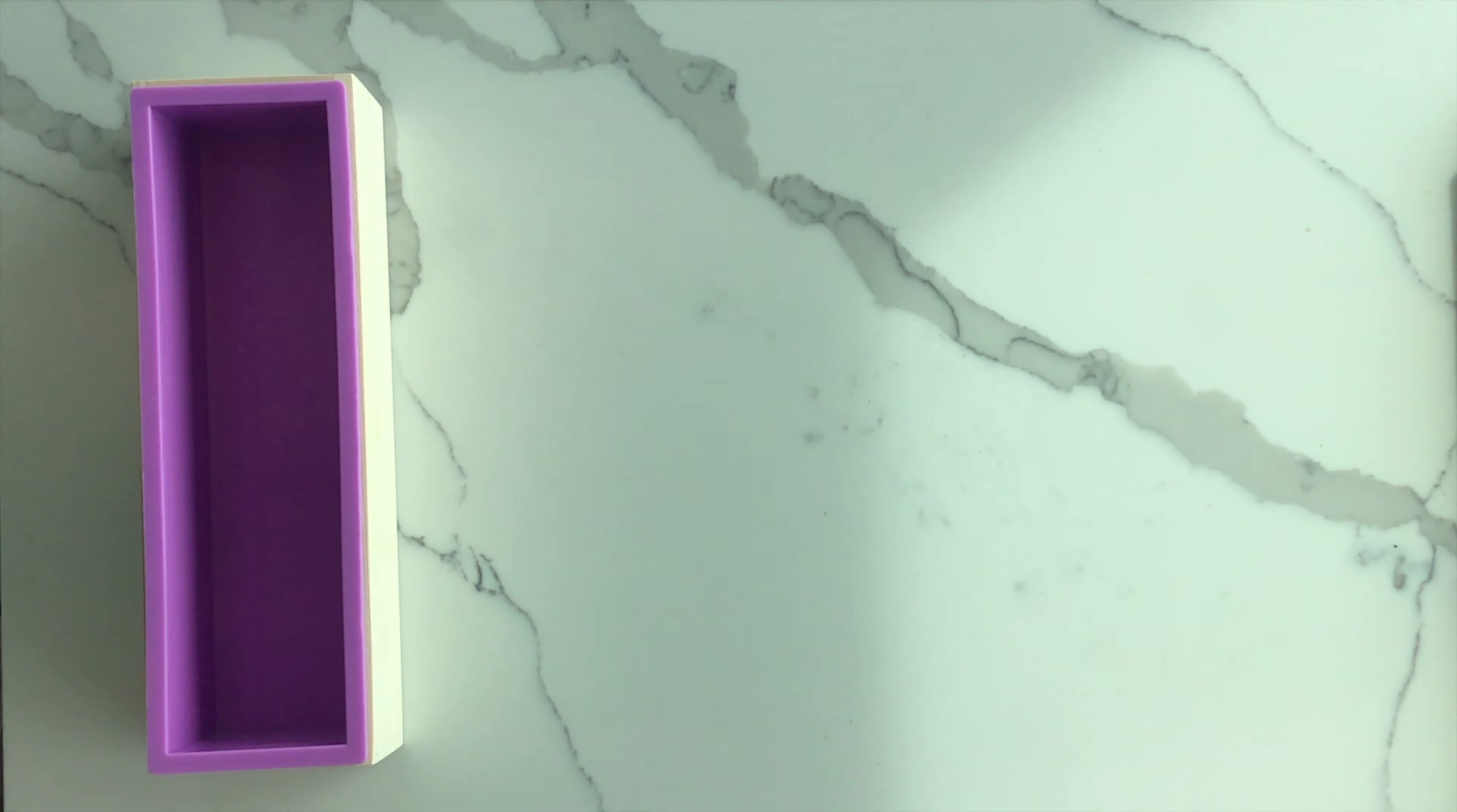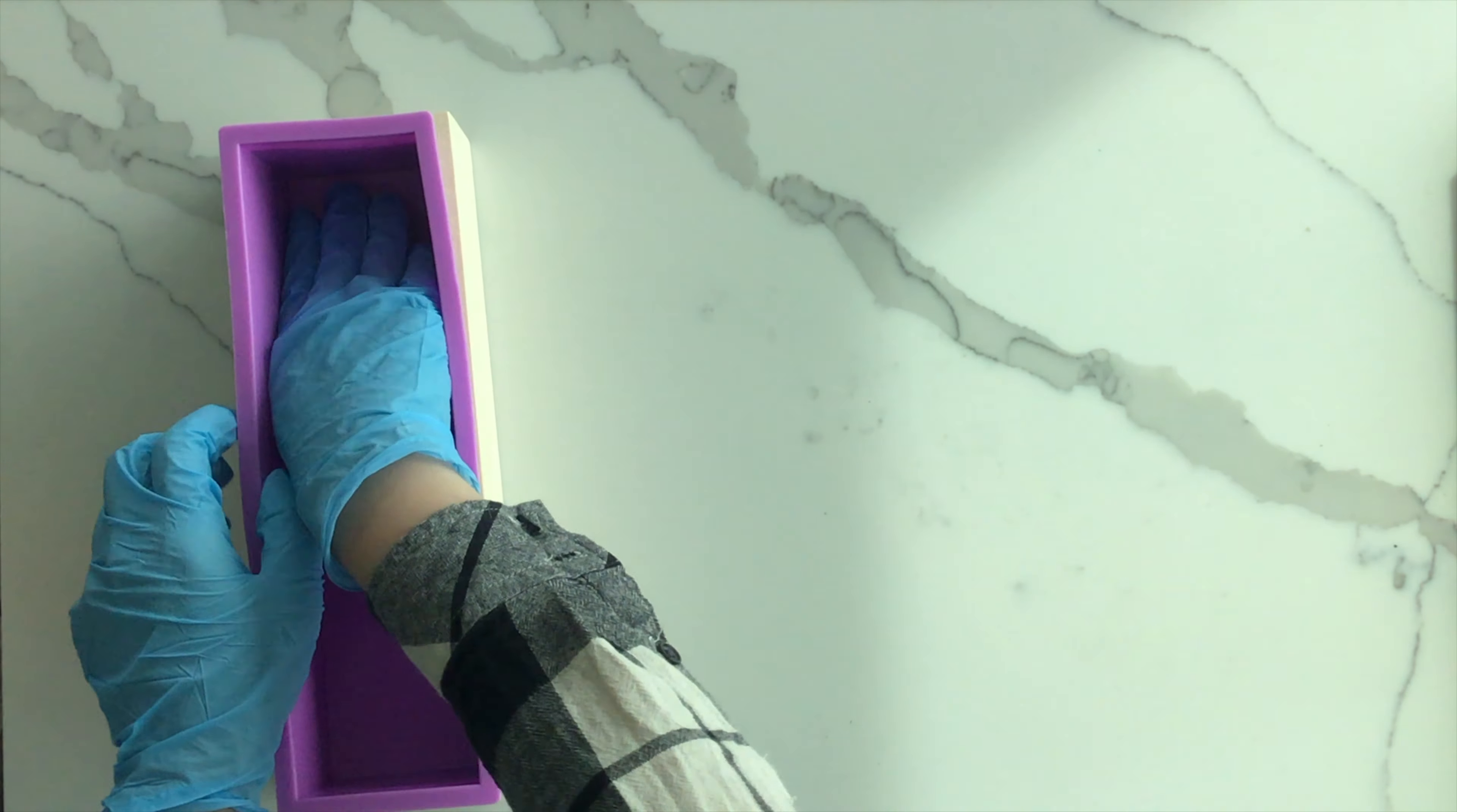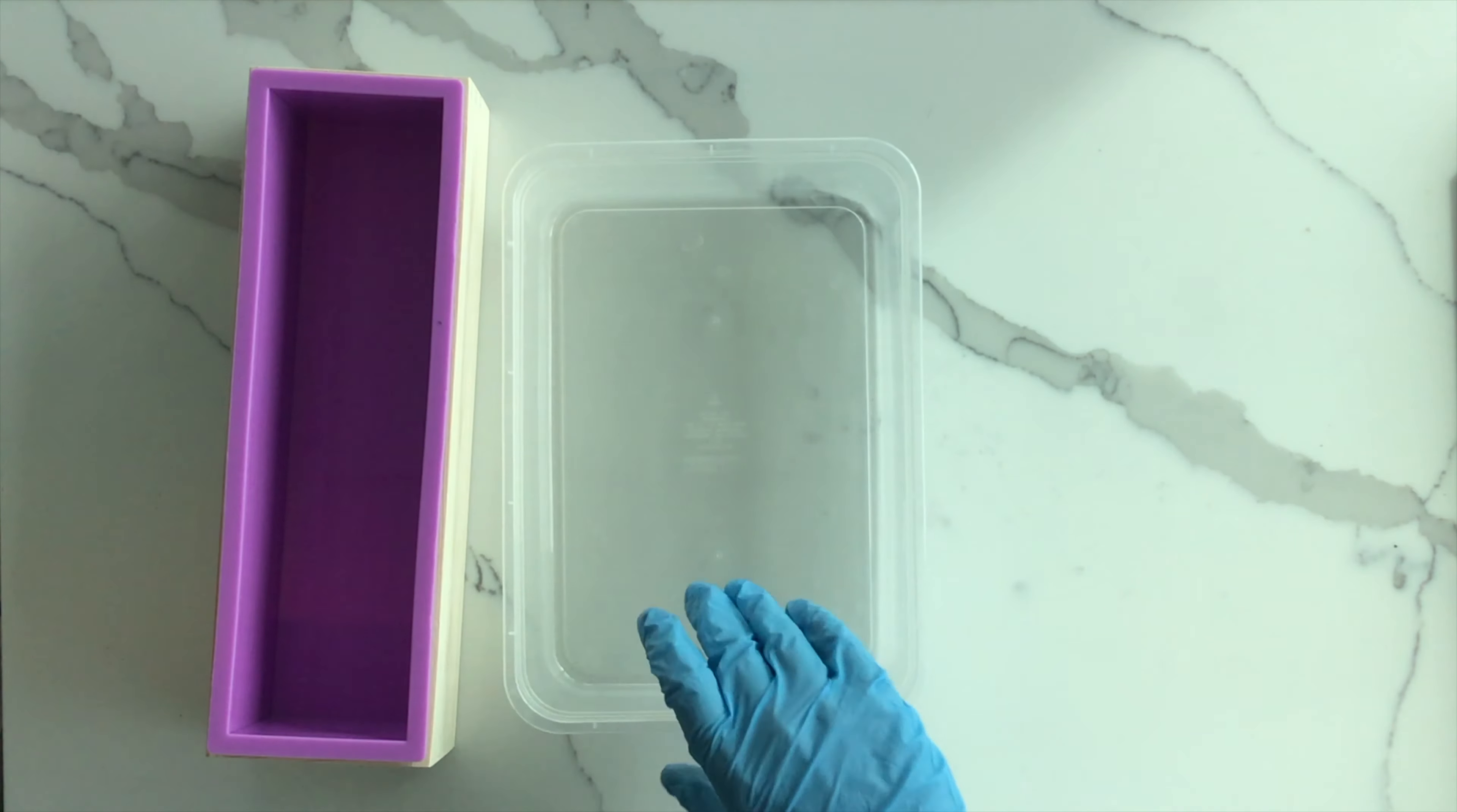Let's talk about molds. This one holds about 2.5 pounds of soap and has a wooden base with a silicone liner. If you don't have something like this, a reusable plastic food container will work just fine. It should be flexible and shallow and remember never to use it for food again.